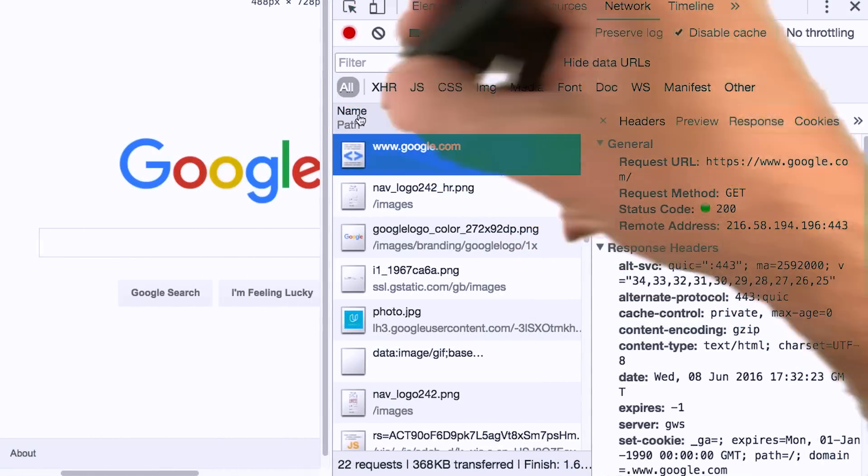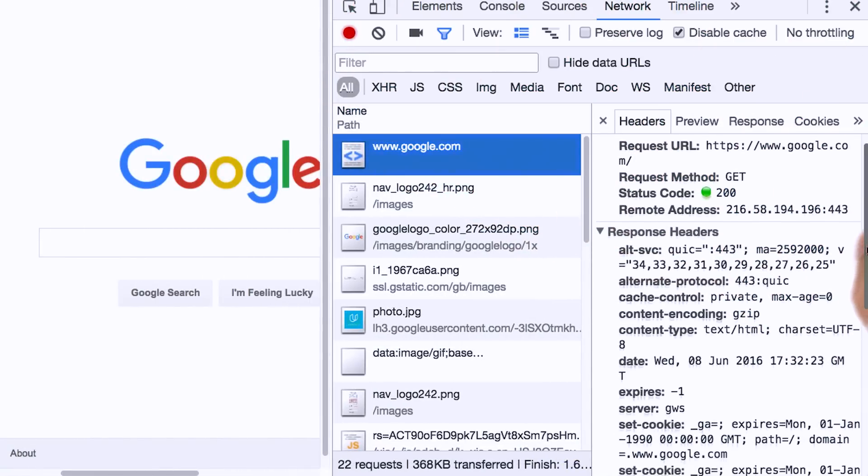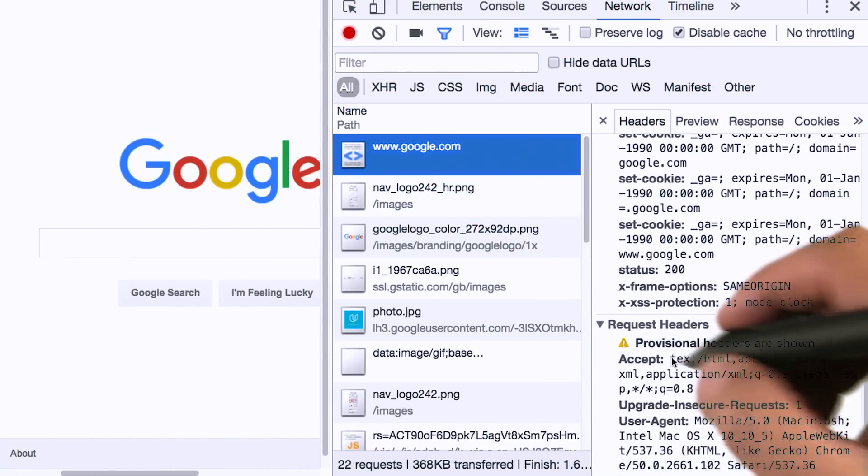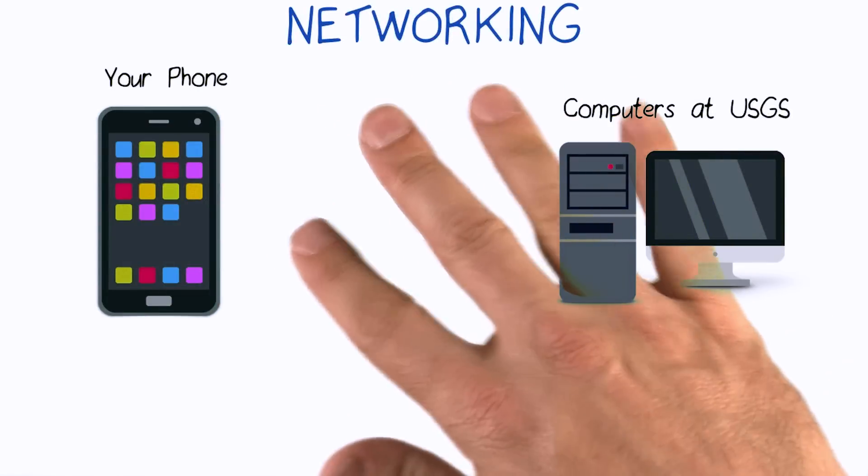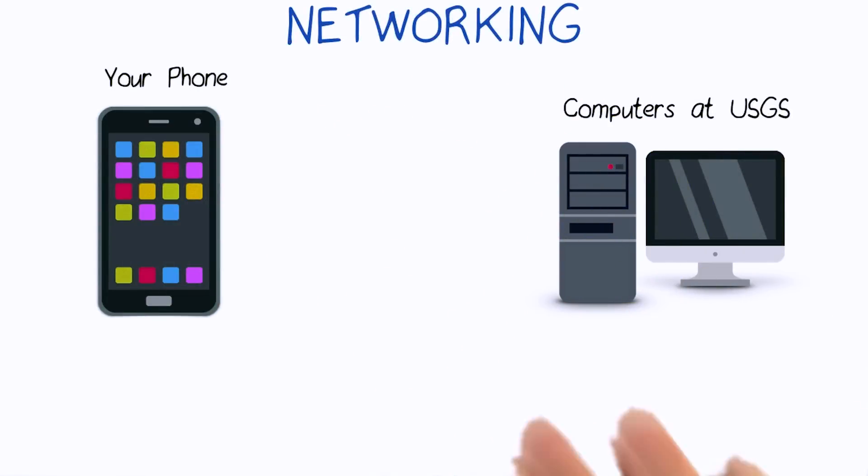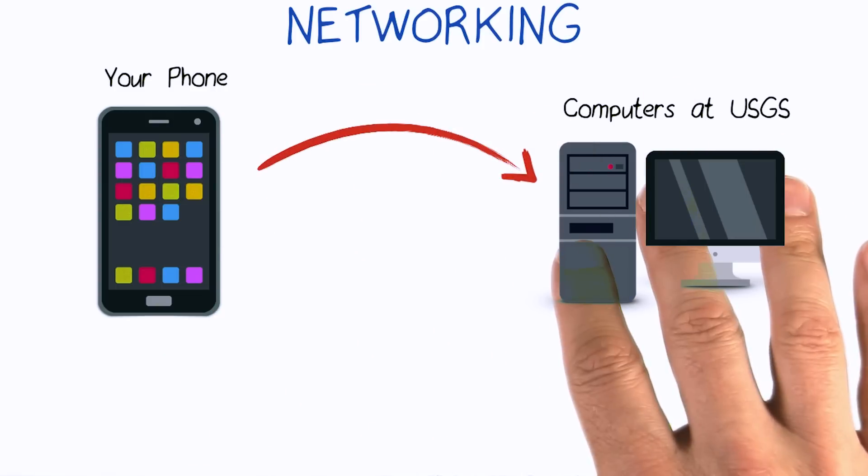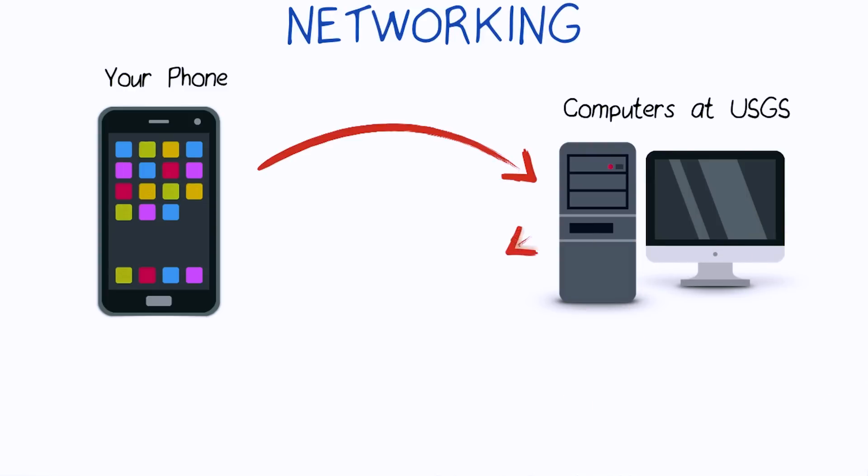And it even tells us the size and how long it took to retrieve the page. And if I resize this window a bit so I can see the content down here, I can even see the request headers that made up the request that came from my device and was sent to the Google servers. Now the same communication and transfer happens when you request data on a mobile device. Whether it's the web browser app viewing a website or any other app using an API, apps can fetch data from some remote source across the internet, such as computers owned by the USGS.